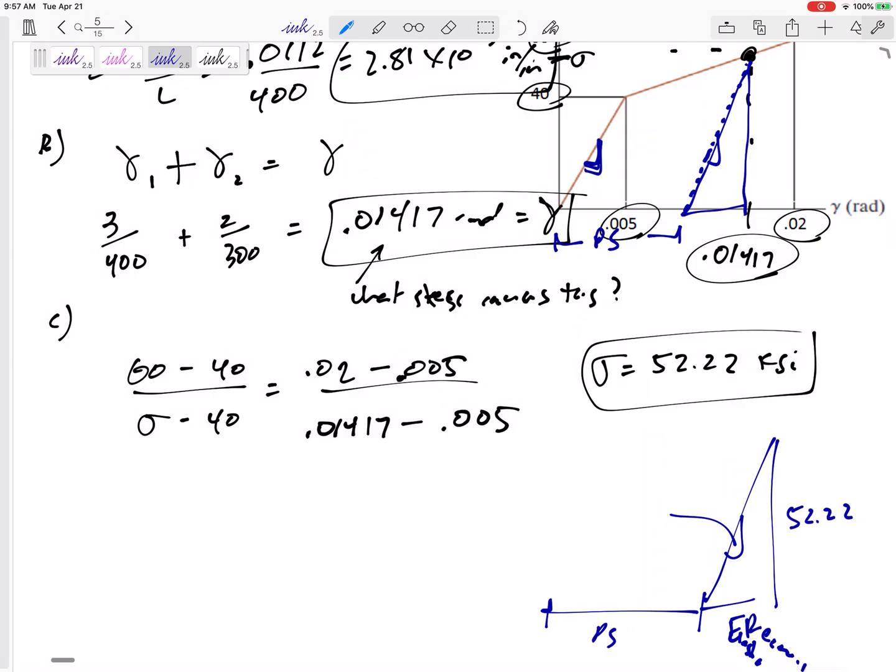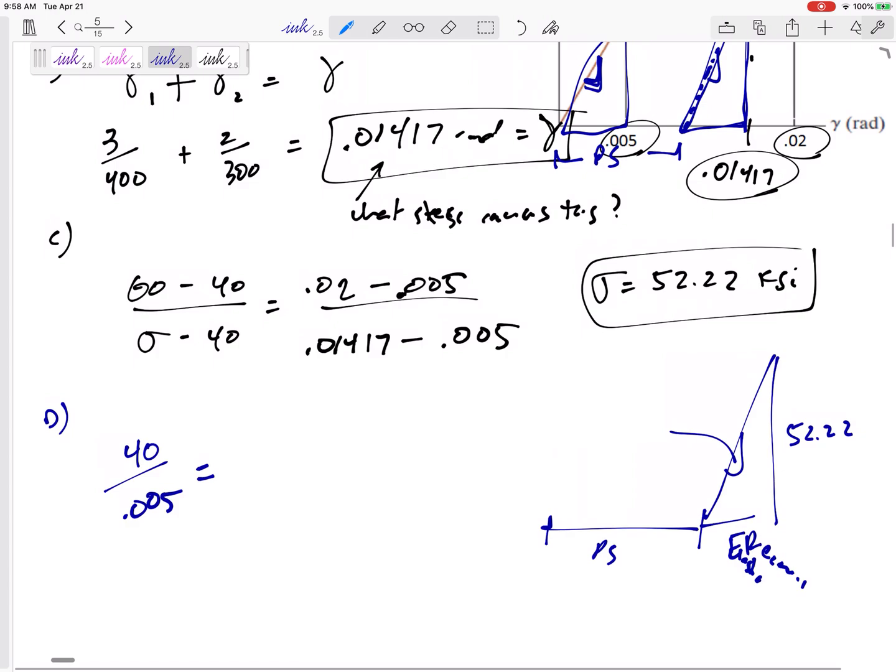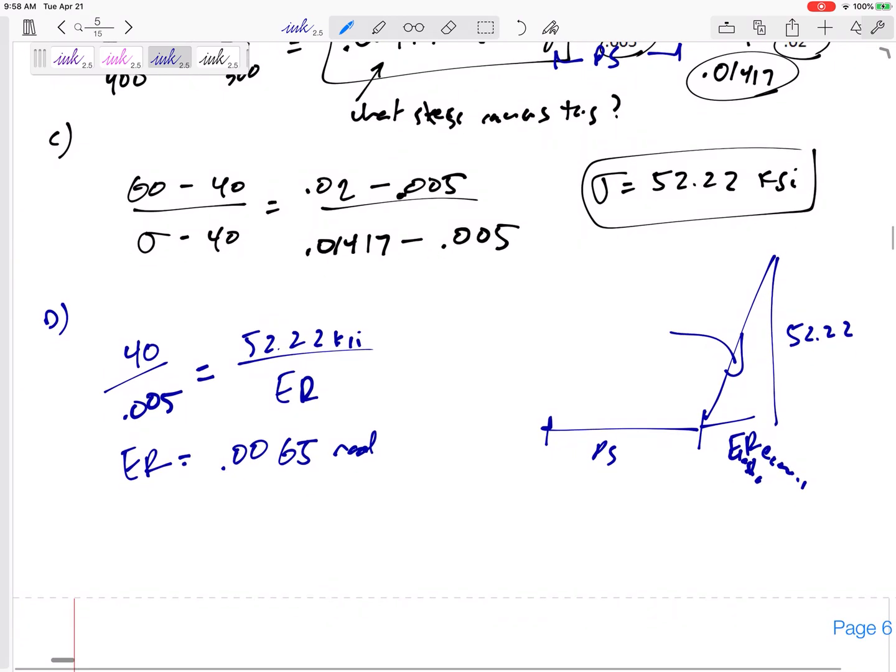So if I know that the slope right here is the same slope of this, what is the slope of this? Slope is rise over run. So this is part D. You can even think of it as the same slope or think of these as similar triangles, same thing right, slope, similar triangles. And so this would be 52.22 over the elastic recovery, so the elastic recovery, 0.0065, 0.0065 radians. So that's how much it bounces back.